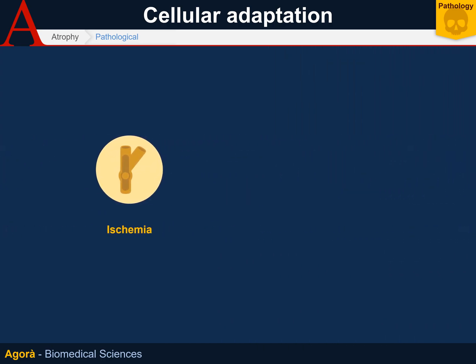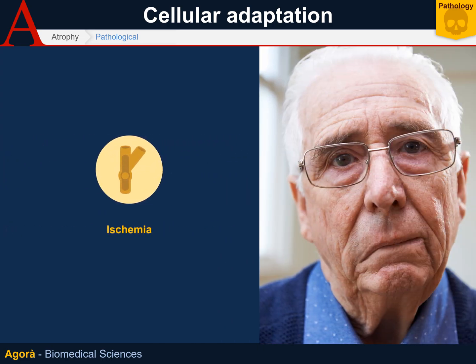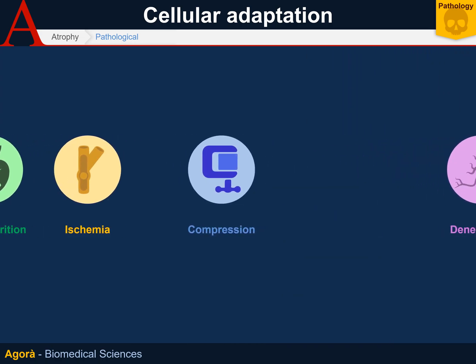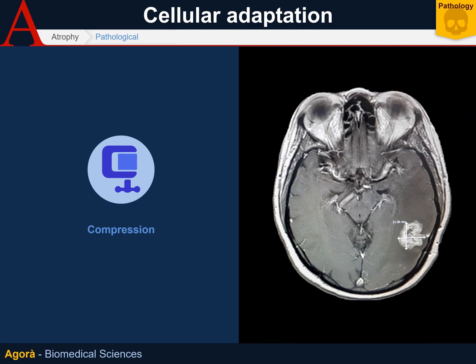Ischemia is a restriction in blood supply causing a reduction in volume and number of tissue cells. An example is age-related cerebral atrophy caused by atherosclerosis. Compression atrophy is caused by a specific pressure on a tissue. For example, benign tumors are not harmful in themselves, but may cause harm since they put pressure on other healthy areas of the body, causing their death.